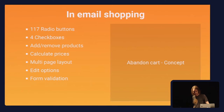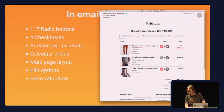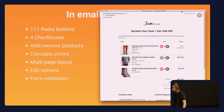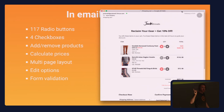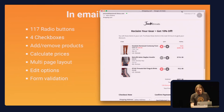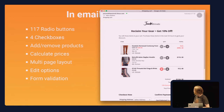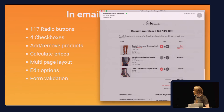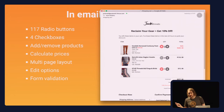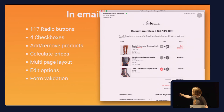Next is a shopping cart — the one with 117 radio buttons and four checkboxes. We have the ability to add and remove products, a multi-page layout, edit options, and form validation. This is based on an abandoned cart email. You can change quantity with a quantity selector, move it down, or remove it completely from the cart. As I'm changing the quantity, it's also changing the price to the right, and at the bottom it's also changing the subtotal, the tax, the discount, and the total price. And that's all CSS.